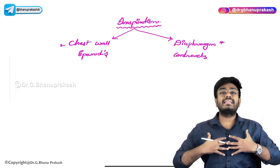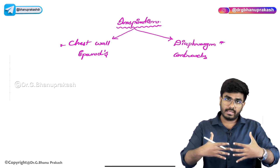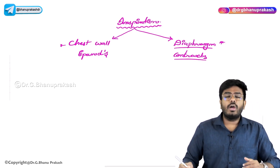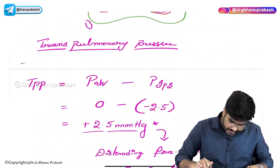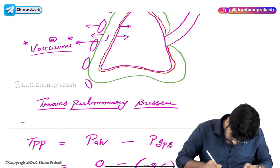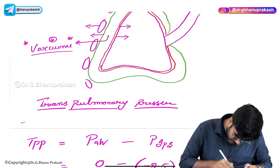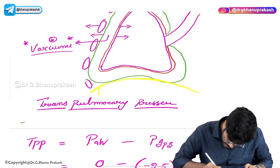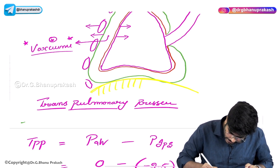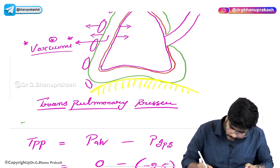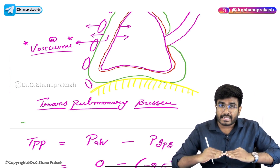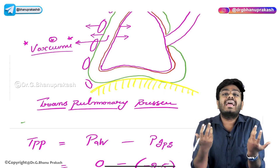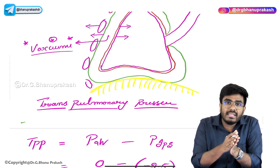When the chest wall is expanding, the parietal pleura is moving away. And whenever the diaphragm is also contracting downward, the diaphragm is attached to the parietal pleura. When the diaphragm is contracting and the chest wall is expanding, the parietal pleura is moving away.